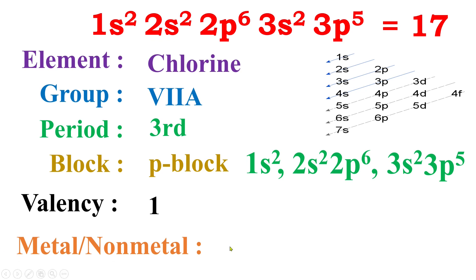Now the last question: is it a metal or a nonmetal? If an element reacts by donating electrons to others, then it is a metal. If an element reacts by gaining electrons from others, then it is a nonmetal. Since chlorine reacts by gaining one electron, it is a nonmetal. This way we can answer different questions related to electronic configuration according to the SPDF rule.